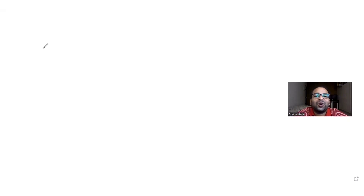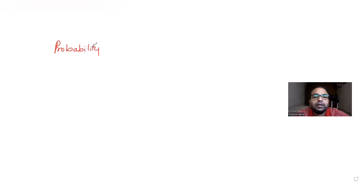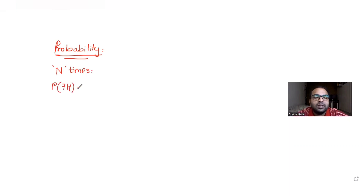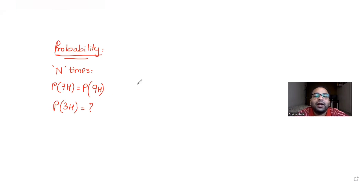Hi guys, I hope you are all doing well. Let's see today's question. Today's question is from the topic of probability. An unbiased coin is tossed n number of times. We are told that the probability of getting 7 heads is equal to the probability of getting 9 heads, and we have been asked to find the probability of getting 3 heads.